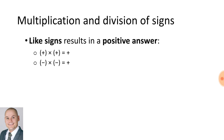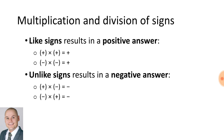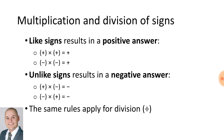When multiplying like signs the answer will be positive. When multiplying unlike signs the answer will be negative. The same rule applies for division.